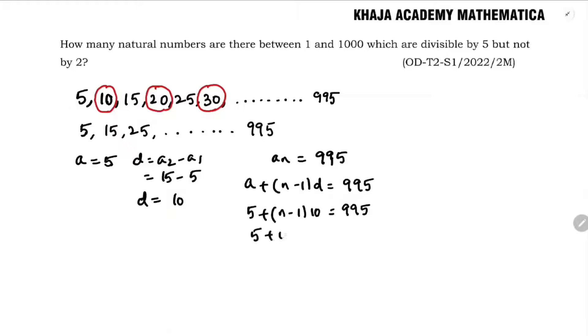So 5 plus 10N minus 10 equals 995. So 10N minus 5 is 995. Minus 5, if I will transpose, will get 995 plus 5, which is nothing but 10N equals 1000.